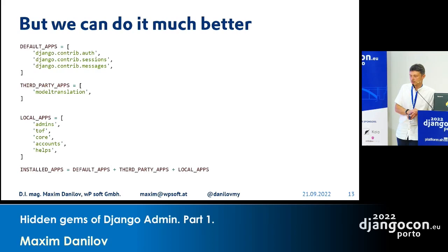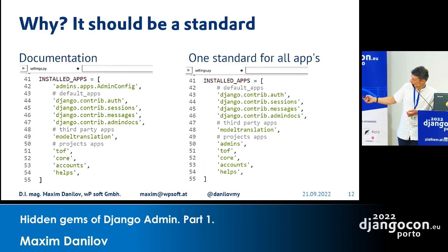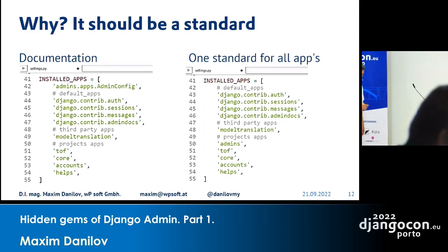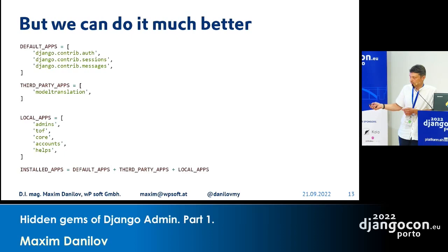One undocumented feature is that in early parts of Django, you could not define admin after the admin docs — it simply did not work. But thanks to the last update from Django, right now it works. Right now we can put admin docs anywhere in our installed apps. Thank you, Django developers.